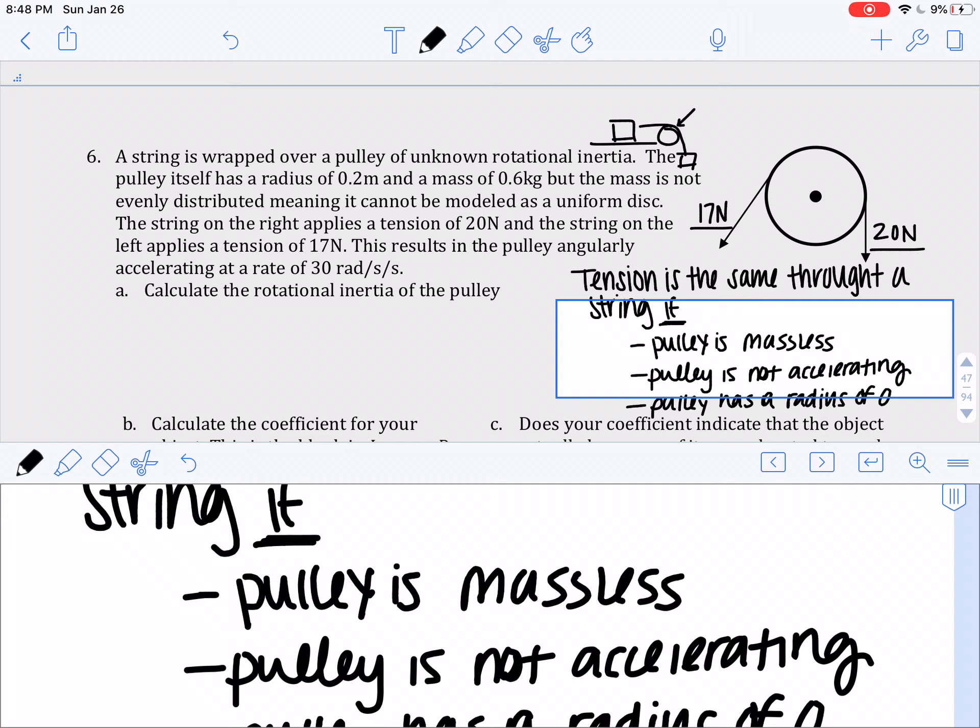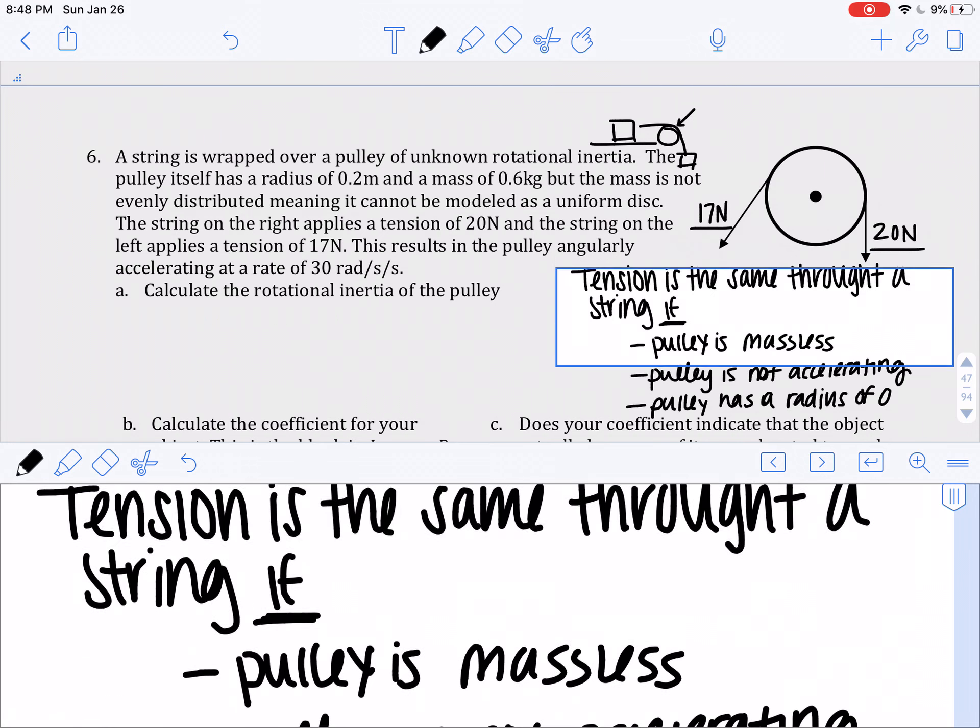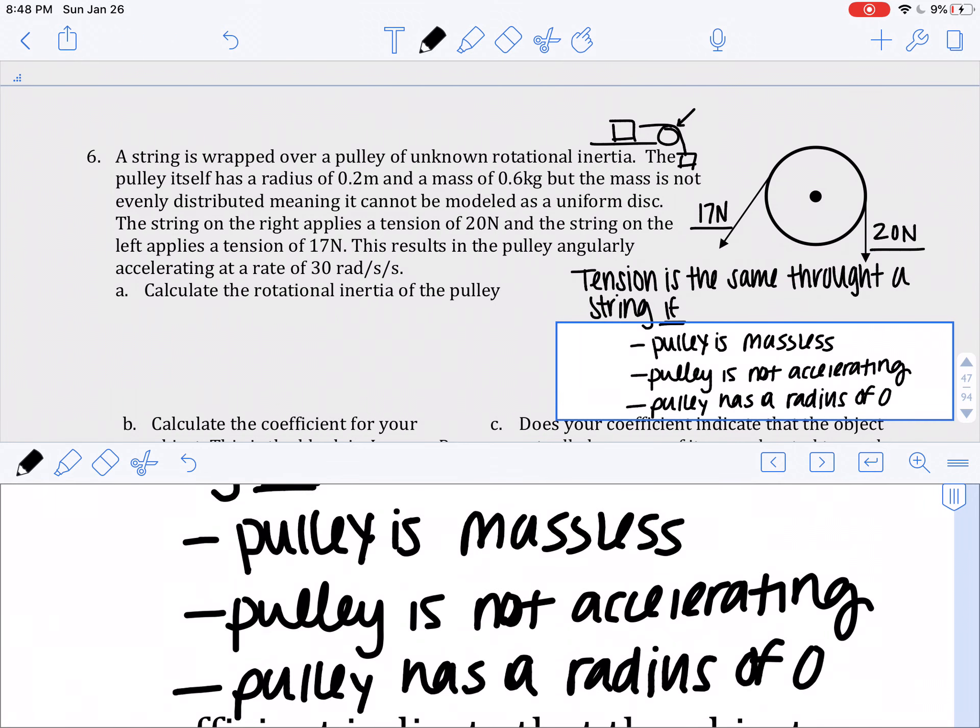And then if the pulley has a radius of zero, then these forces can't apply any torque. Because if they're wrapped around a radius of zero, then they can't get it to move. That's like putting a force at the axis of rotation. So it doesn't do anything to make that object rotate.